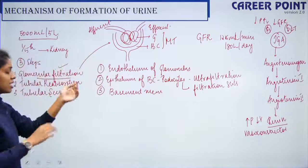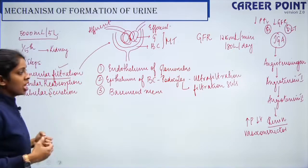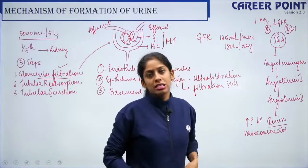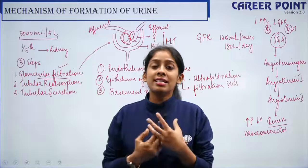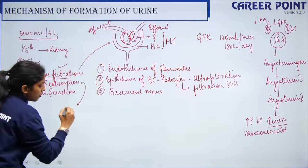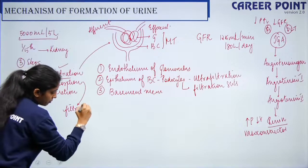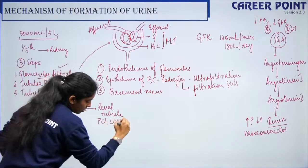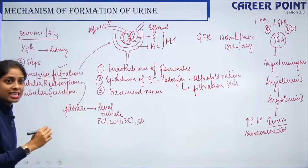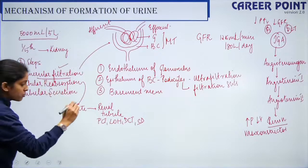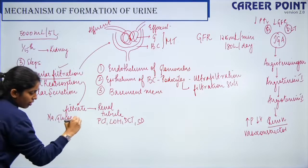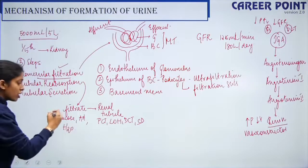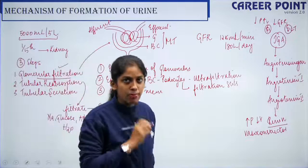The second step is tubular reabsorption. Your kidney filters 180 liters per day, but we excrete only 1 to 1.5 liters of urine, which means 99% is reabsorbed. Reabsorption happens from the glomerular filtrate into the renal tubules — PCT, loop of Henley, DCT, and collecting duct reabsorb all essential nutrients such as sodium, glucose, amino acids, and water. Water is reabsorbed by osmosis; glucose and amino acids are reabsorbed by active transport, which needs ATP.